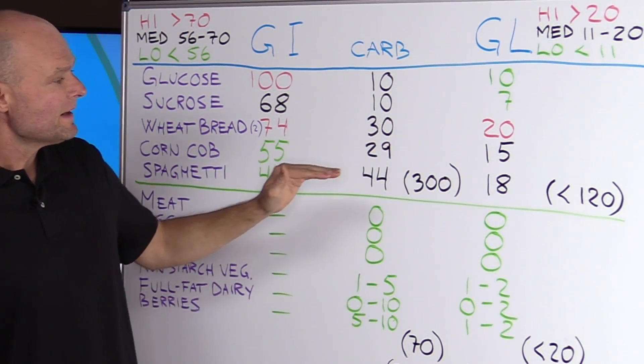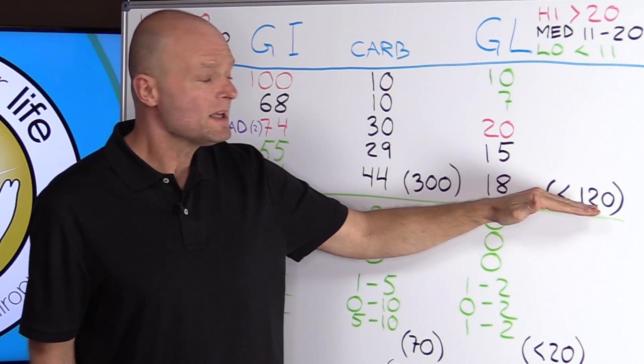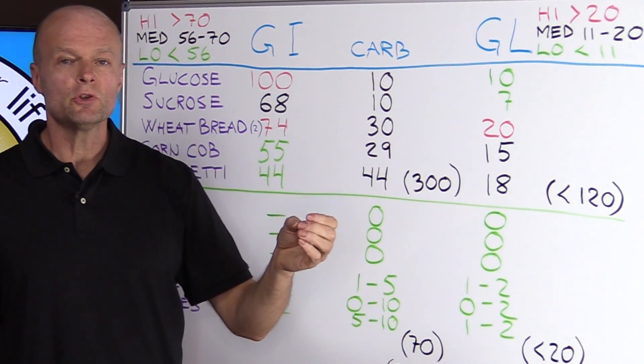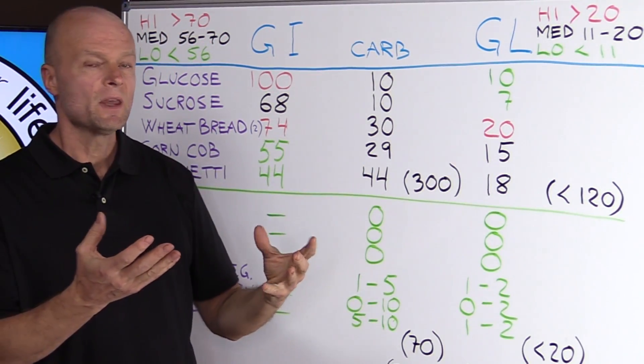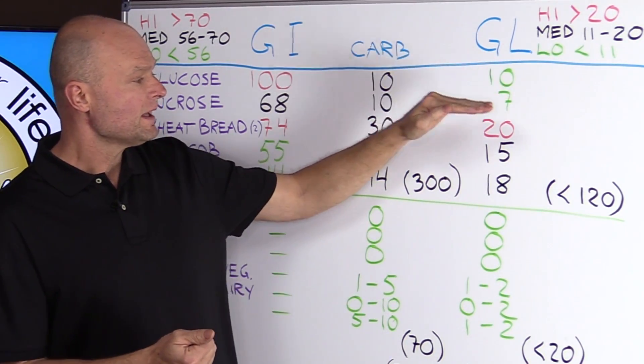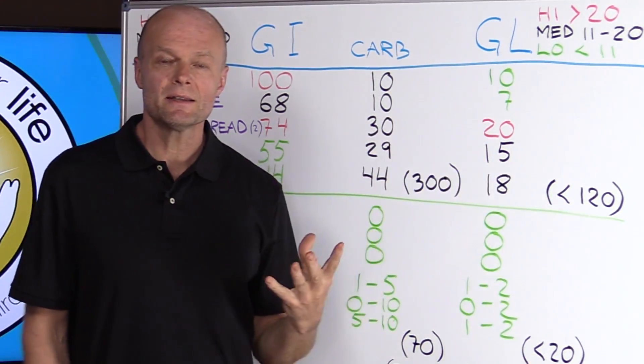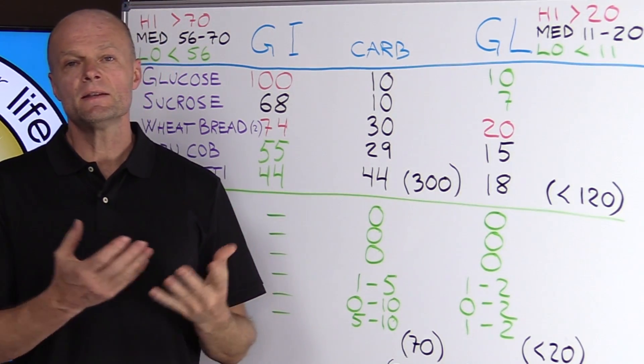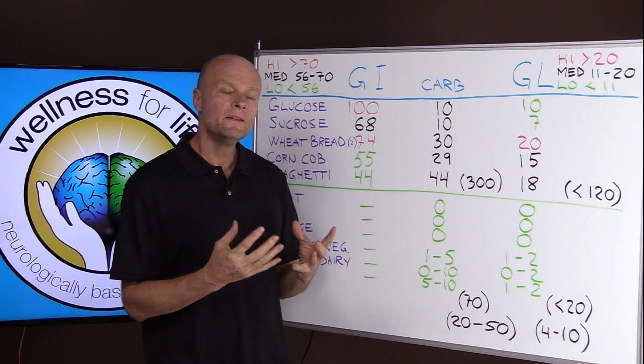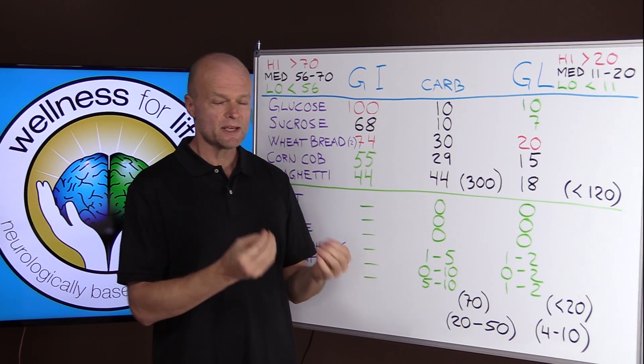And then they also say that you should try to keep your glycemic load, your total glycemic load, the total impact of each meal, each serving, they should add up to less than 120, and then they say that you're okay. But in my mind, this is just crazy.